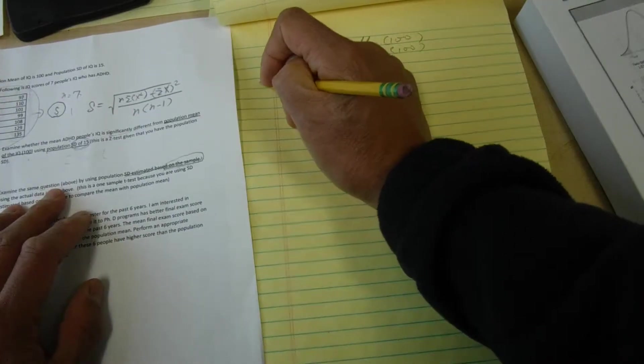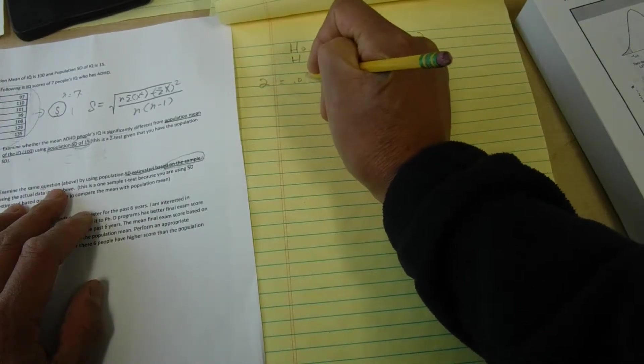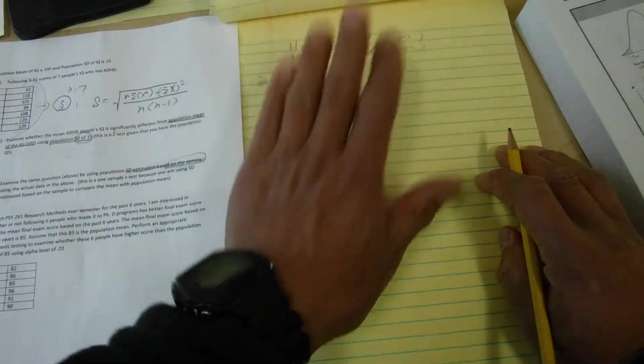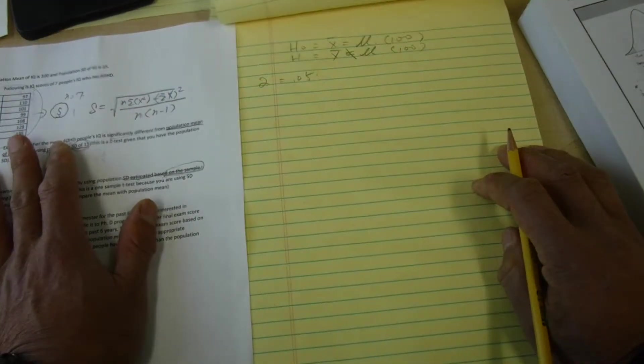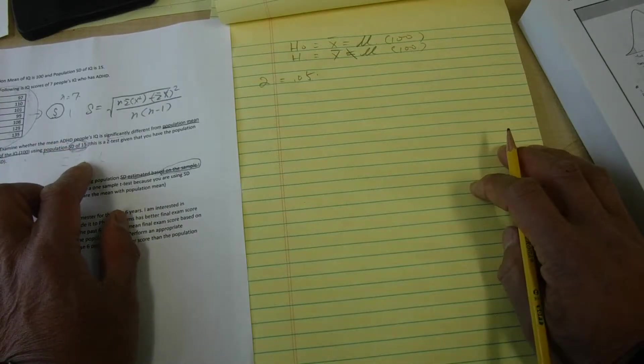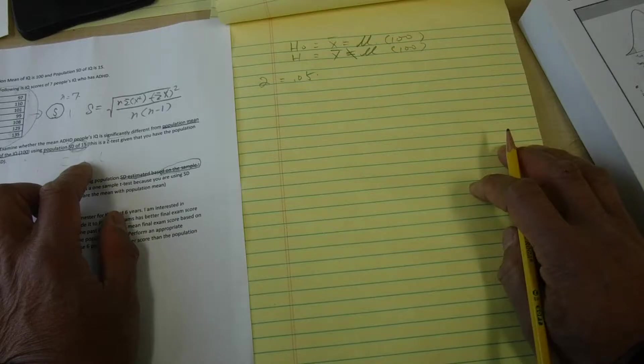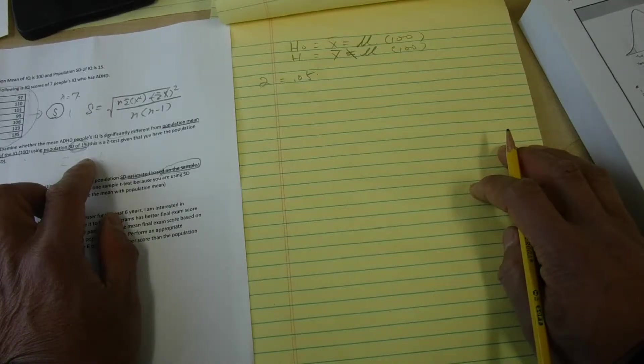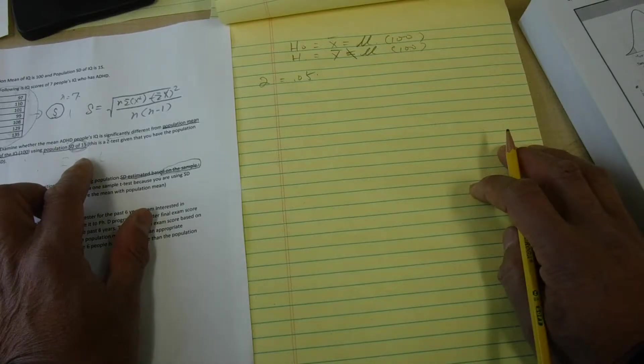We are going to use alpha equal 0.05. So the difference between this test and the previous test is in the previous one sample z-test, we are given the population standard deviation. In this case, we need to compute sample standard deviation. And therefore, our estimate of standard error of the mean is less accurate than the case of z-test. Therefore, we have to use t-table as opposed to z-table.